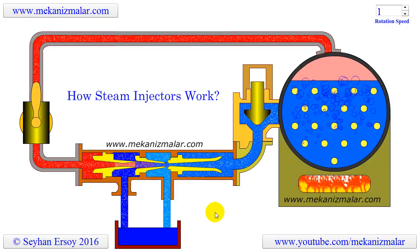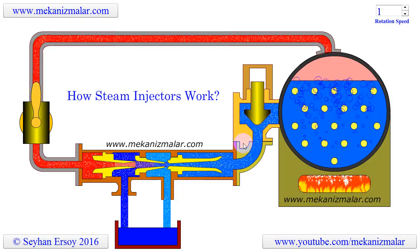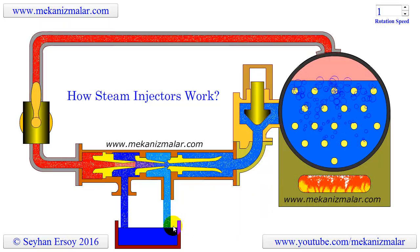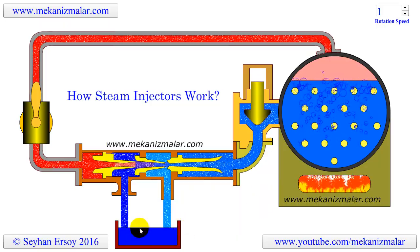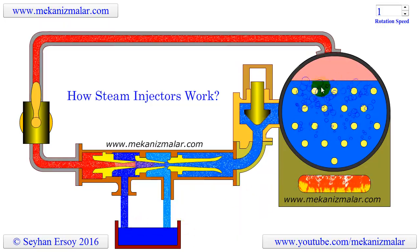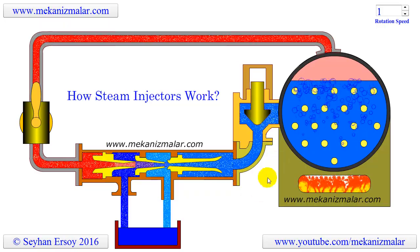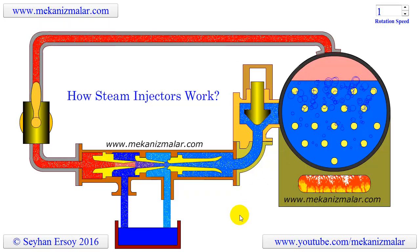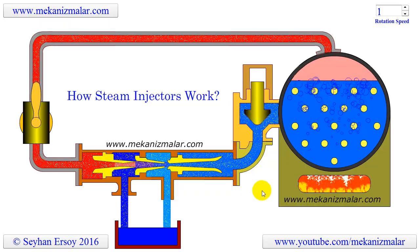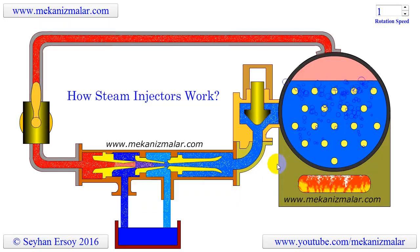Imagine for a moment that you want to pump water from atmospheric pressure to a boiler which has a pressure level of 10 to 15 times above atmospheric pressure. Before the steam injector was invented, cold water was pumped to a boiler by using steam reciprocating pumps.